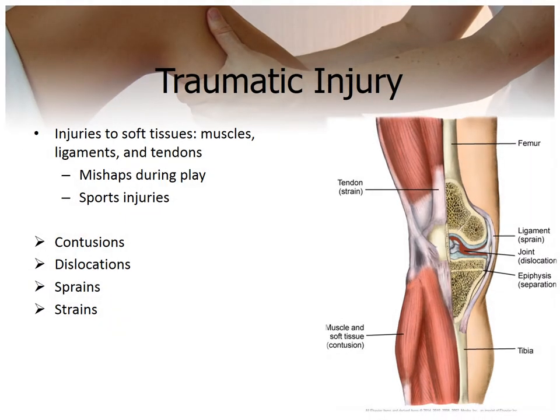Now let's talk about traumatic injury — injuries to the soft tissues, muscles, ligaments, and tendons. Those usually happen in children due to play or sports injuries. Contusion means damage to soft tissue, subcutaneous tissue, and muscle. There is an escape of blood into tissues that causes ecchymosis, the black and blue discoloration. It also causes swelling, pain, and some disability. Usually it's the result of a crushing injury such as fingers slammed in doors or getting hit with a hammer.